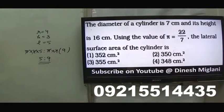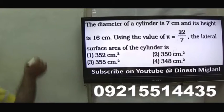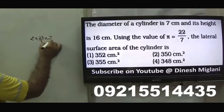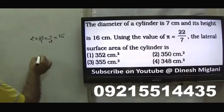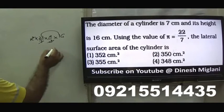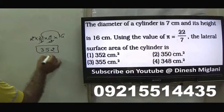Sixth question: diameter of a cylinder is 7 cm, so radius = 7/2, and height is 16 cm. Lateral surface area = 2πRH = 2×(22/7)×(7/2)×16. The 2s cancel, giving 22×16 = 352 square centimetres. The answer is the first option.